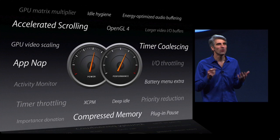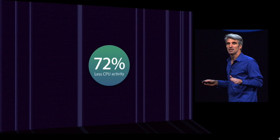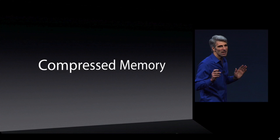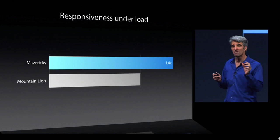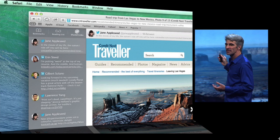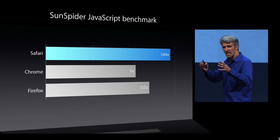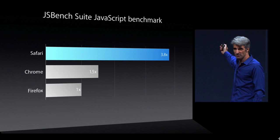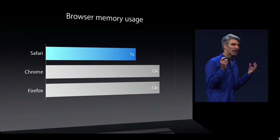Mavericks comes with AppNap, which is really cool — there's 72% less CPU activity while using it. They also have compressed memory, which takes the inactive RAM you're not using and compresses it so you have more free space to open apps. There are new Safari updates as well, among other smaller things.